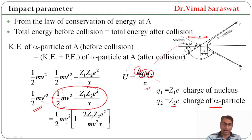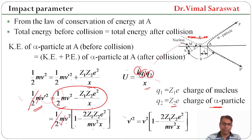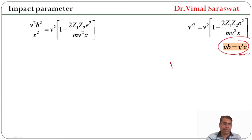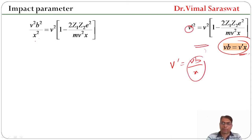On taking ½mV² as common, we get V'² = V²·[1 − 2Z1Z2E² / (mV²·X)]. From the angular momentum relation, V' = VB / X. Substituting this, B²/X² = 1 − 2Z1Z2E² / (mV²·X), which simplifies to B² = X·[X − 2Z1Z2E² / (mV²)].